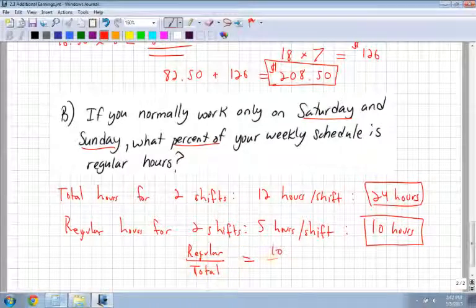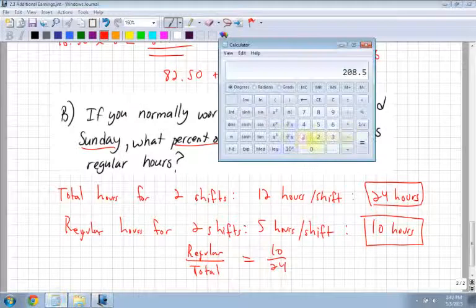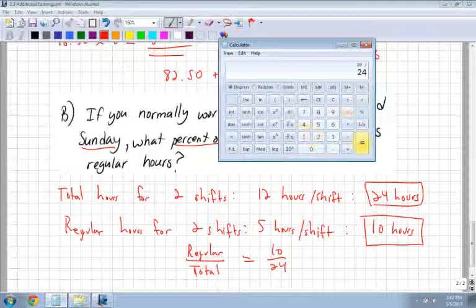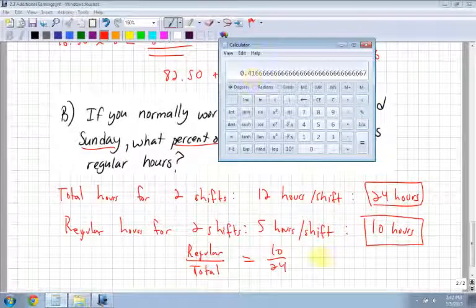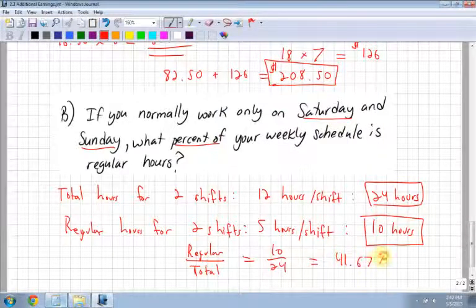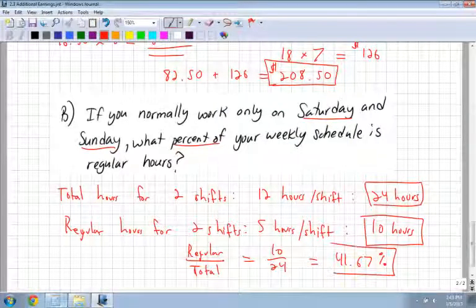Here I get 0.41666, so move the decimal place 1, 2—that's 41.67% of my pay is for regular. I'm actually working more premium shifts than regular, because my regular shifts only make up 41.67% of my total shift for the weekend for those two days.